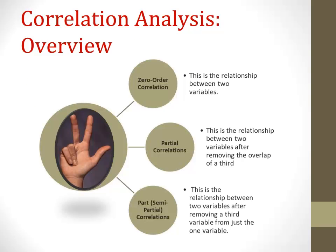When discussing correlations, it is important to recognize that there are three simple correlation analyses. The zero-order correlation is the relationship between two variables while ignoring the influence of other variables. The partial correlation — the focus of this tutorial — is the relationship between two variables after removing the overlap of a third, fourth, or fifth variable completely from both variables. And finally, a part or semi-partial correlation examines the relationship between two variables after removing a third variable's influence from just one of those variables.